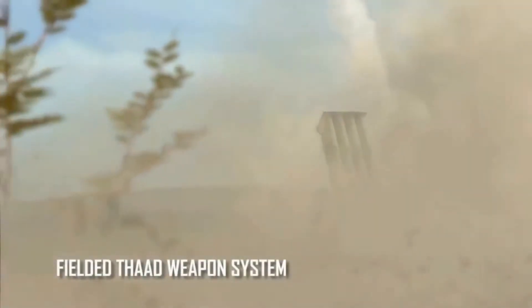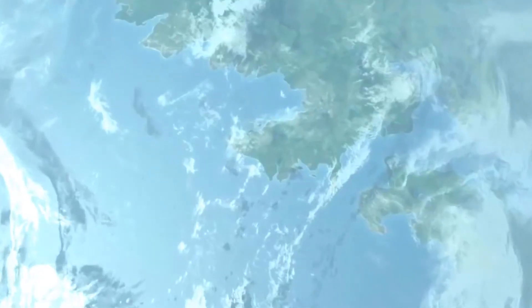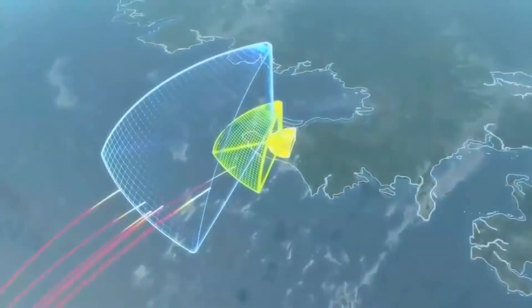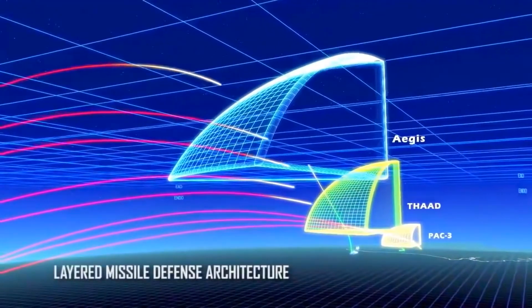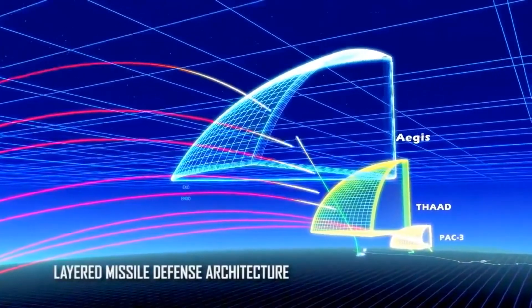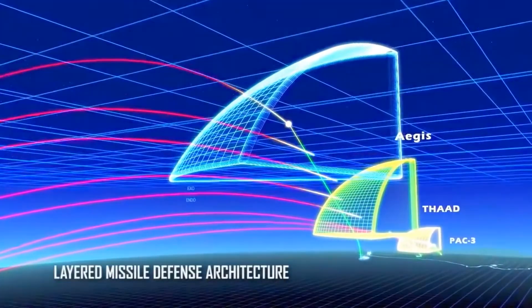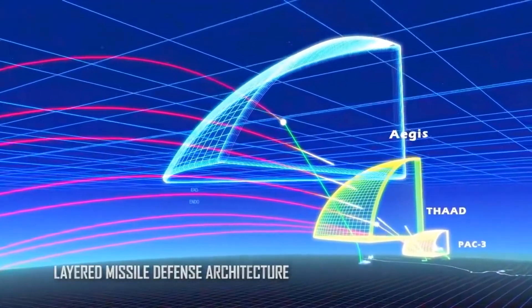The THAAD weapons system is a key element in our layered ballistic missile defense architecture, filling the gap at the mid-to-high endo-atmospheric regions not covered by the lower-tier Patriot Pac-3 or the upper-tier Aegis SM-3 class.